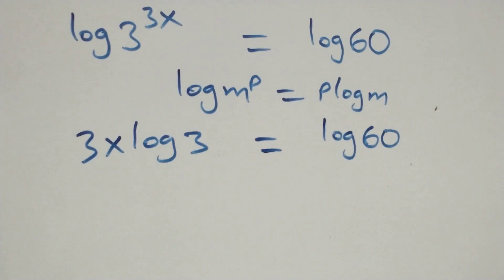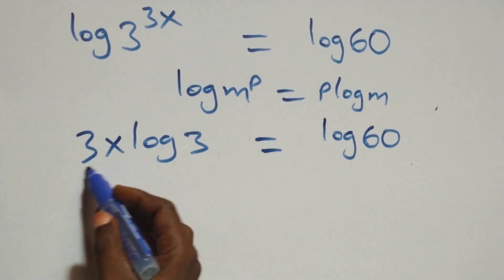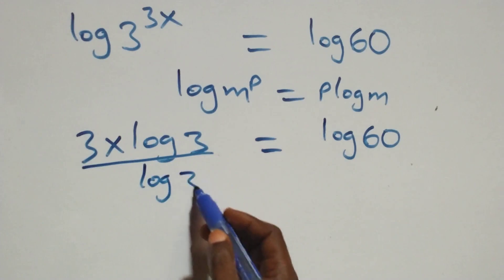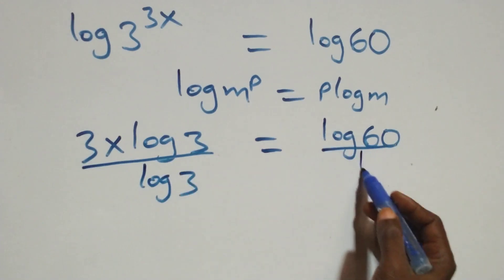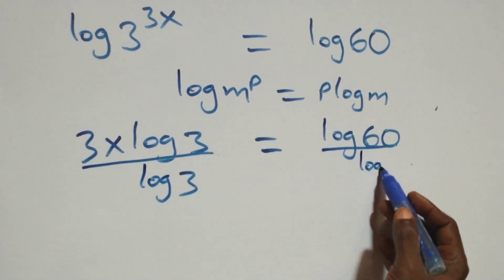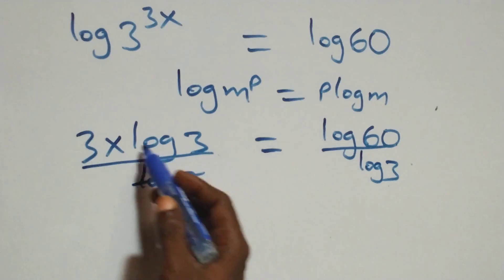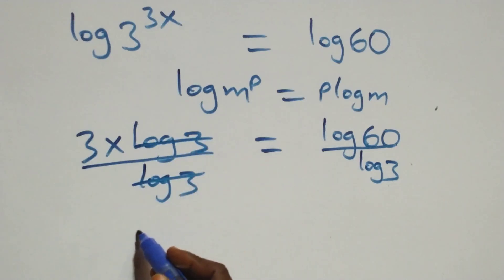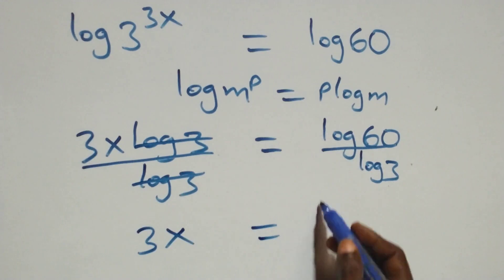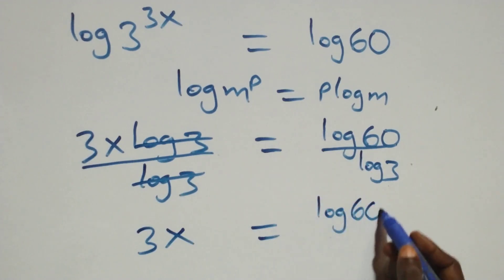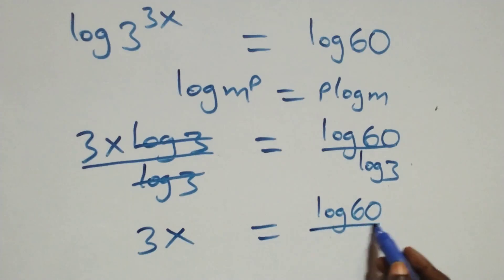We divide both sides by log three — divide by log three — and log three cancels. We have three x equals log sixty over log three.